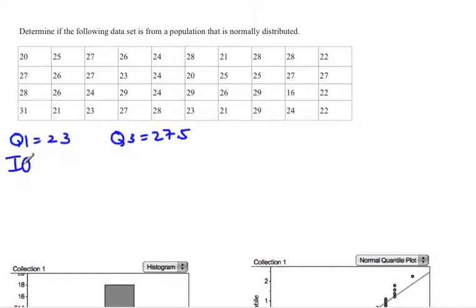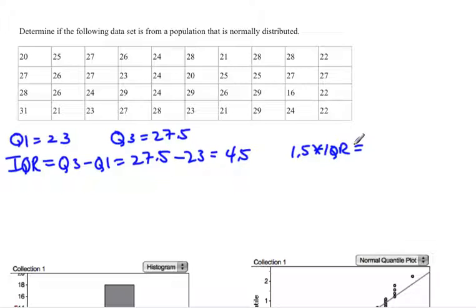To find outliers, we look at the interquartile range, which is Q3 minus Q1. That would be 27.5 minus 23, which is 4.5, and then we multiply that by 1.5. So the interquartile range times 1.5 is 6.75.